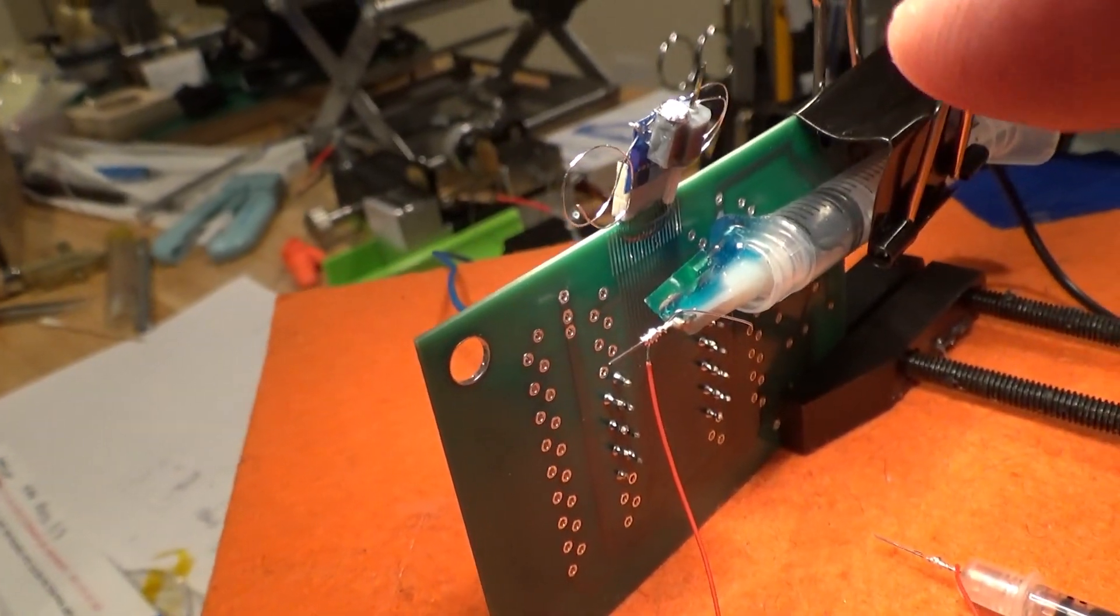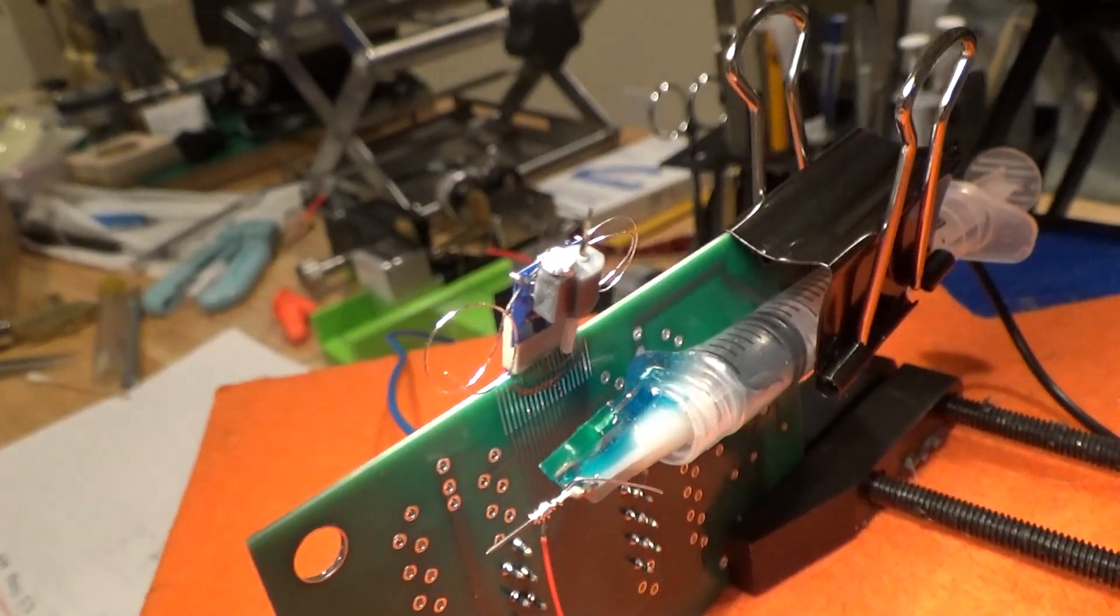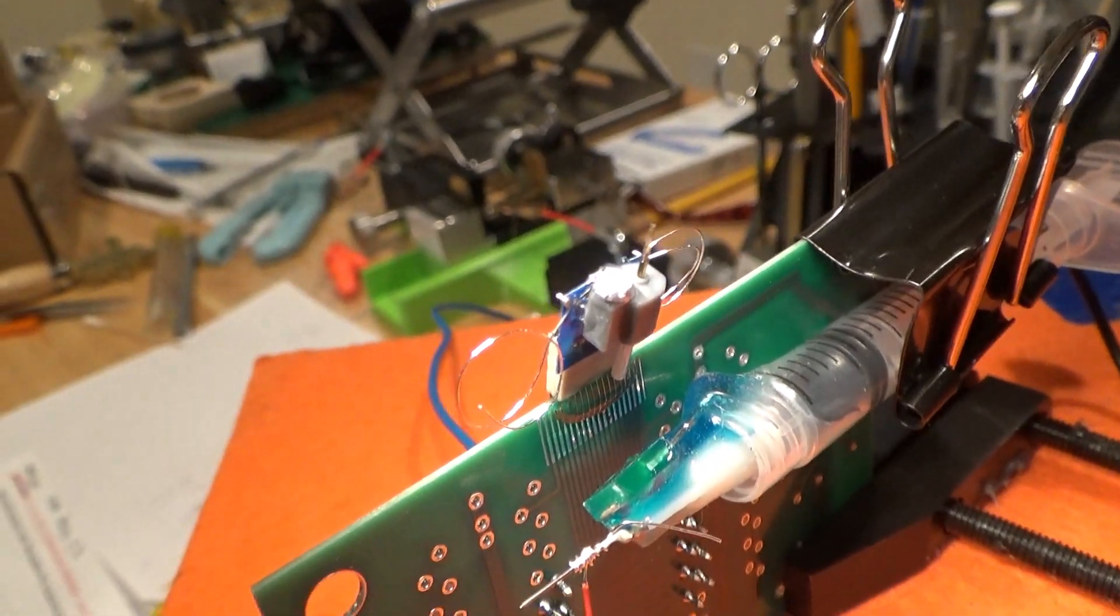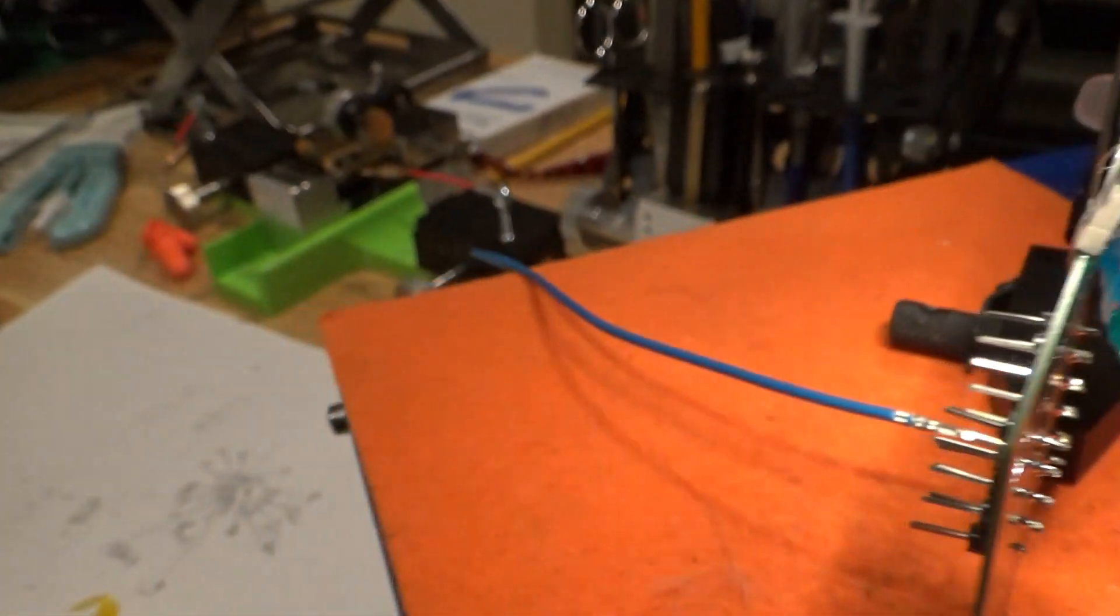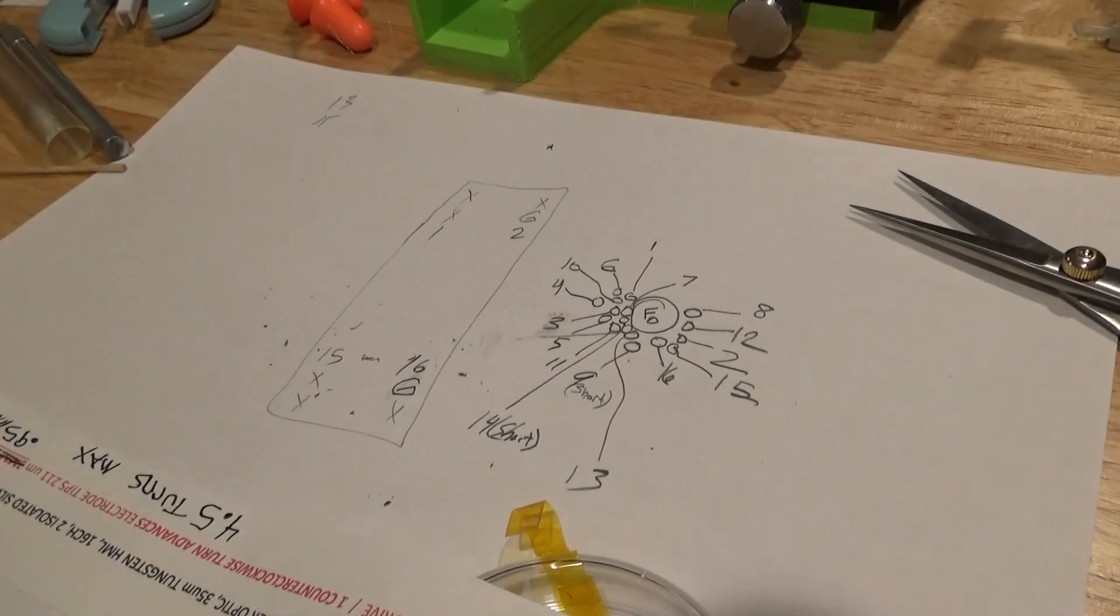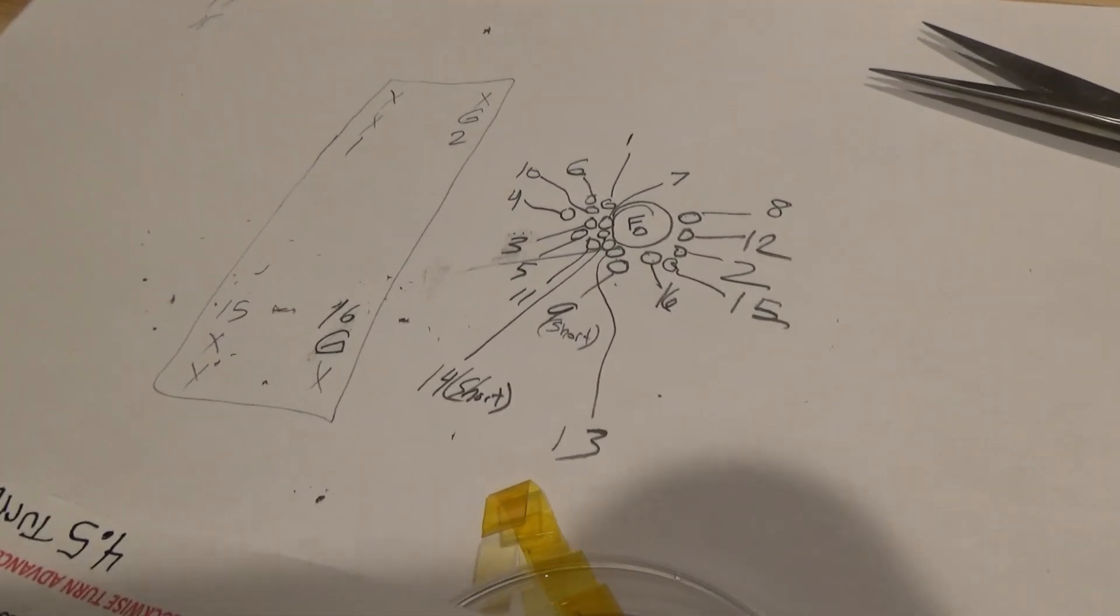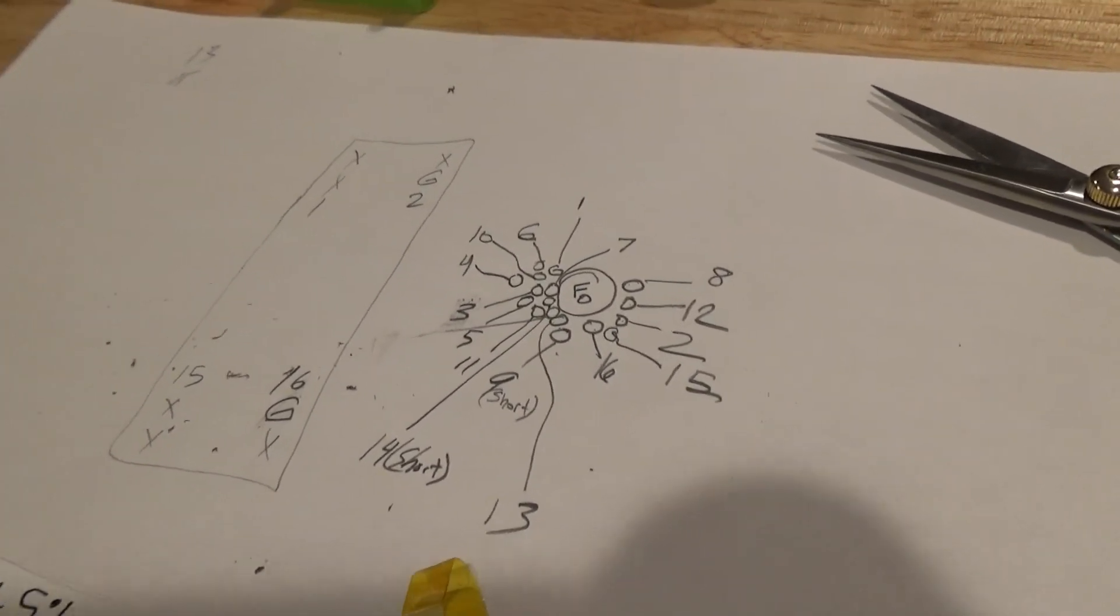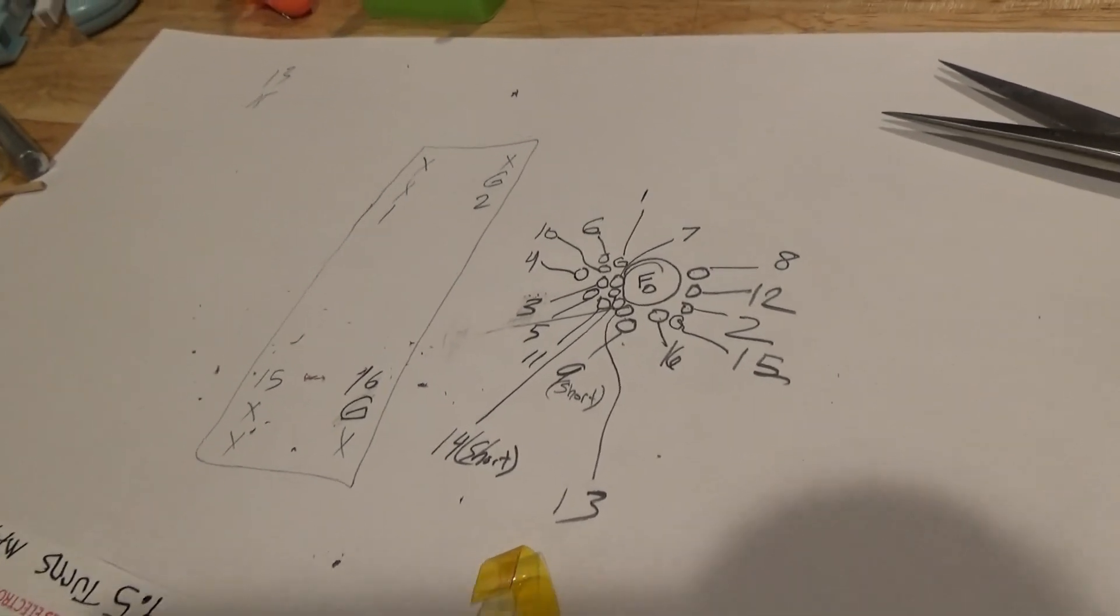This is what I do with the very tips of the micro wires. When I find them, I sketch out on paper the approximate location in relationship to the connector and the fiber core.